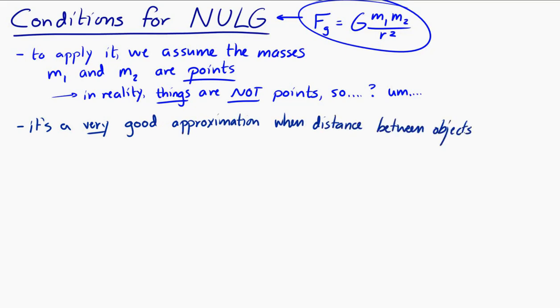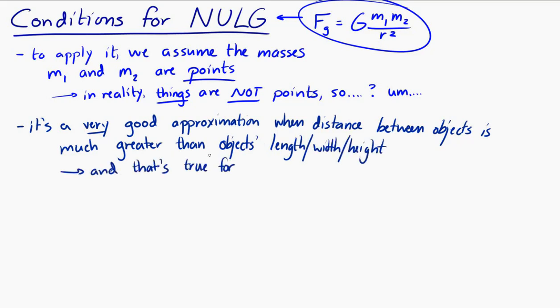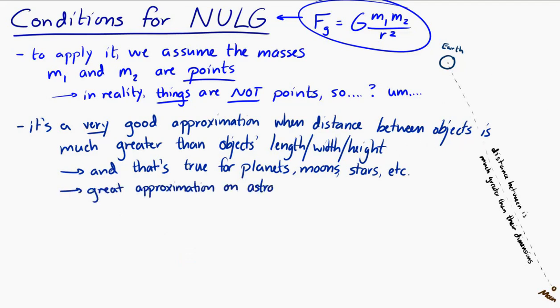Well, it turns out it's a very good approximation when the distance between the objects is much, much greater than their length, width, their height, their dimensions. And this is true for planets, stars, moons. Planets, moons, they are so far apart that their sizes, their dimensions, their length, width, and heights are negligible compared to the distances between them. So for astronomical objects, the approximation that masses are points is actually a really good approximation. So we got that going for us.